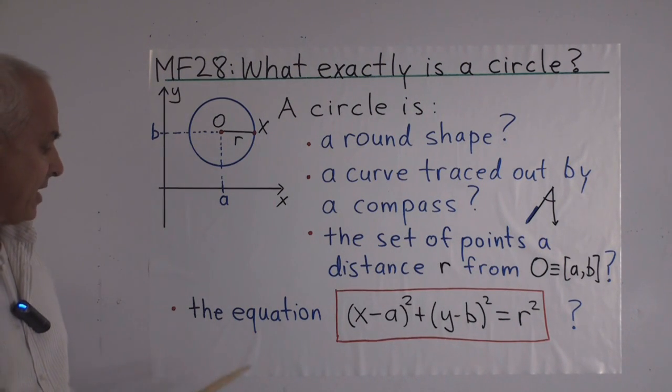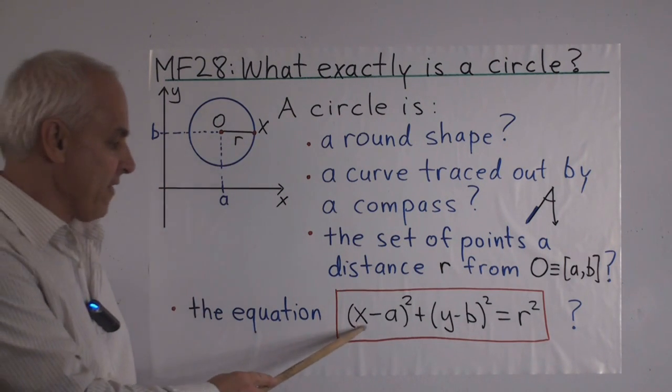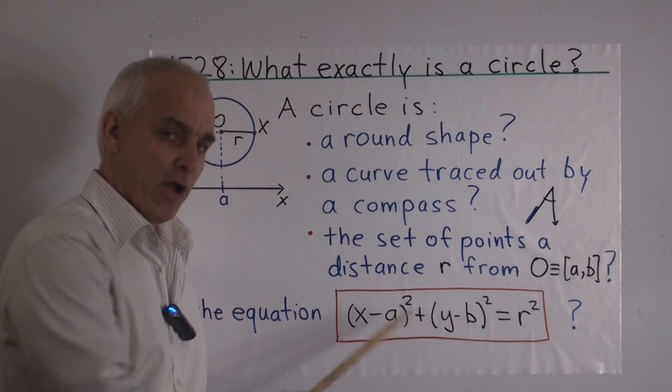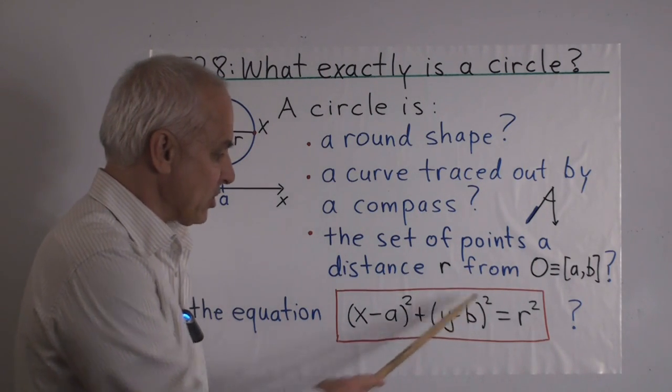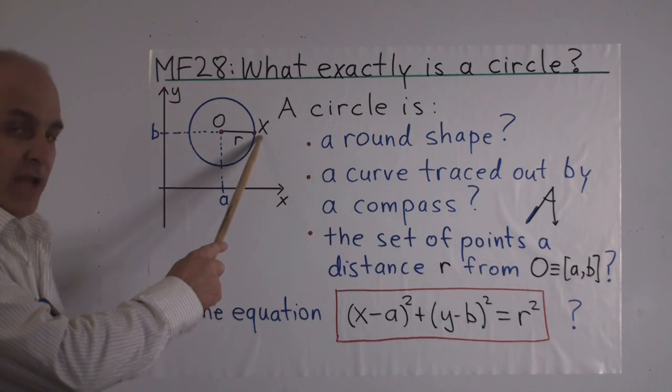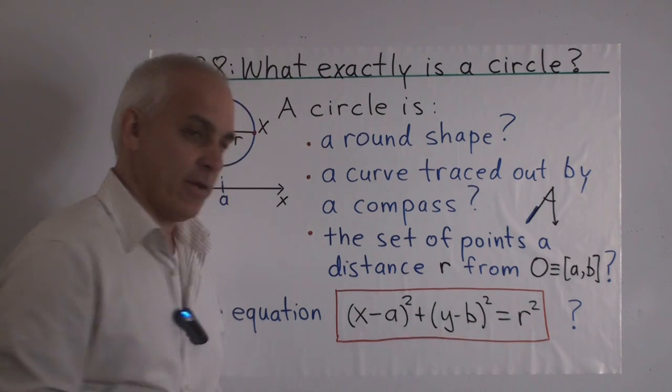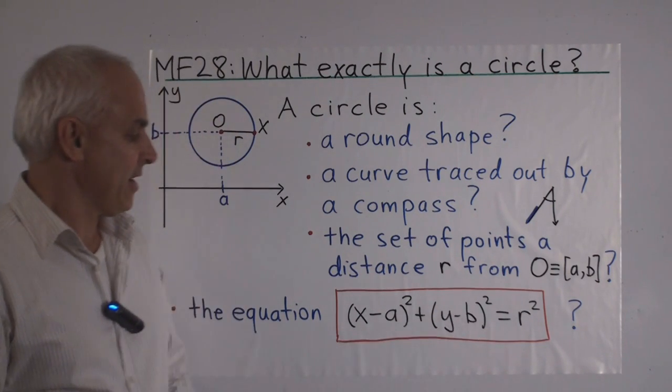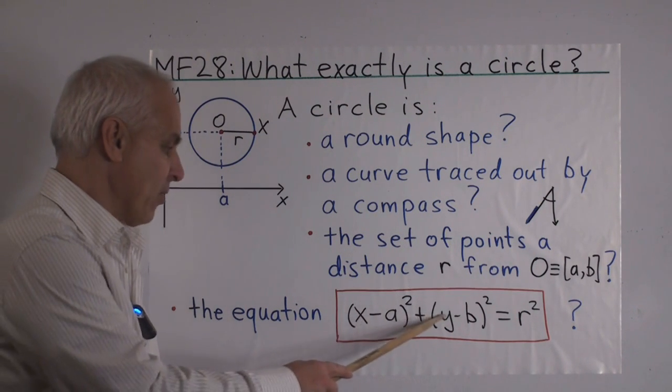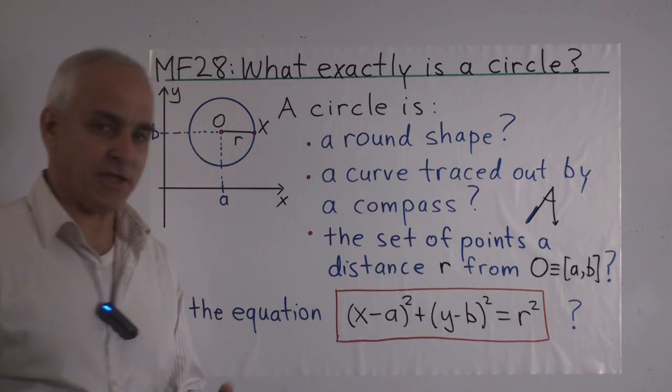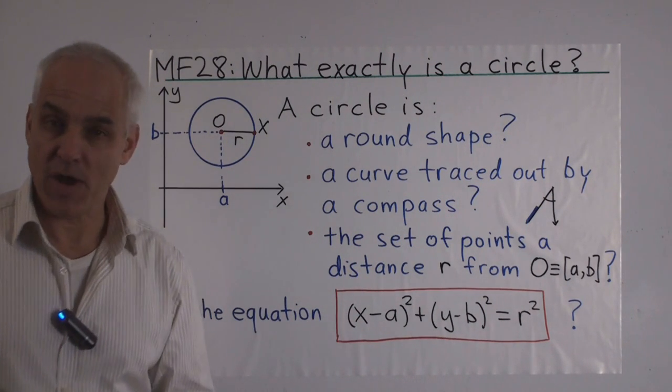Another reasonable candidate is simply the equation. So here we have not distance but quadrance, which is the square of distance. So (x-a)² + (y-b)². That's the quadrance from a point (x,y) to the point O. And we're saying that the quadrance is equal to r². That defines the circle, and we could say that's the equation of the circle, in the sense that any point (x,y) that satisfies that equation lies on the circle. So a very good idea is to say that a circle is this equation.